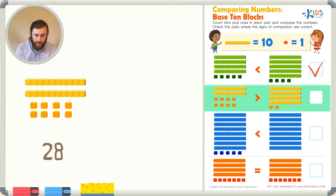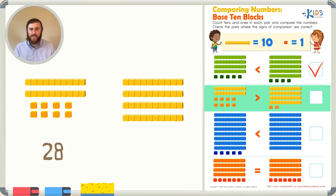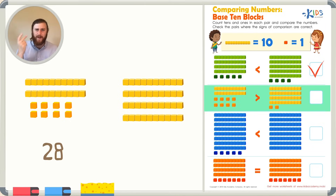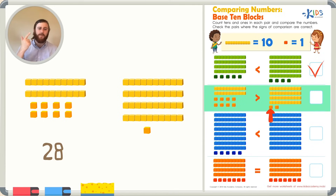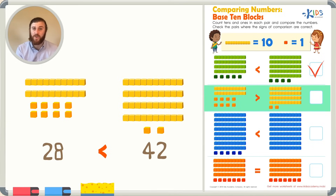Let's compare that to the number on the right. The number on the right has 1, 2, 3, 4 longs. I'm already starting to think the number on the right is going to be bigger because it has more longs — the longs are worth 10 each, and this one has 4 tens. That's 10, 20, 30, 40. So already this has 40. We haven't even counted the two cubes yet, which gives us 41 and 42. So this number is definitely greater than 28. Let's check which way the comparison symbol is facing. In this example, the comparison symbol shows that 28 is greater — so this is not correct. We cannot check this one.